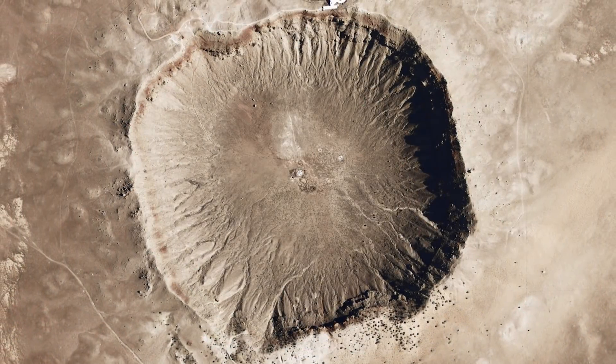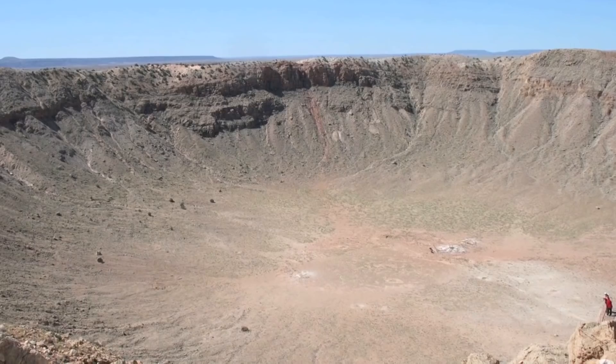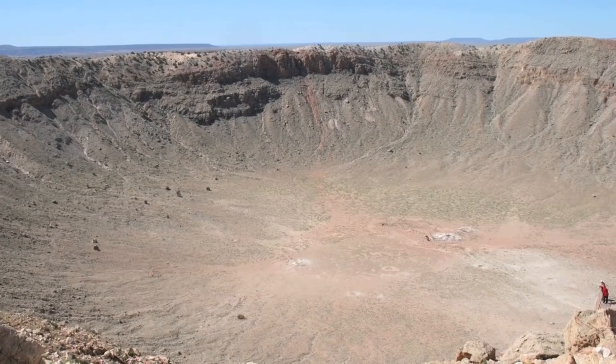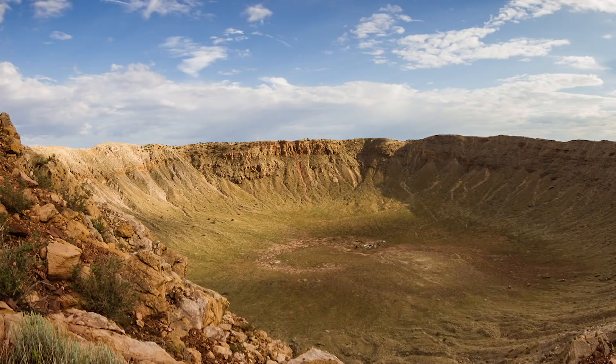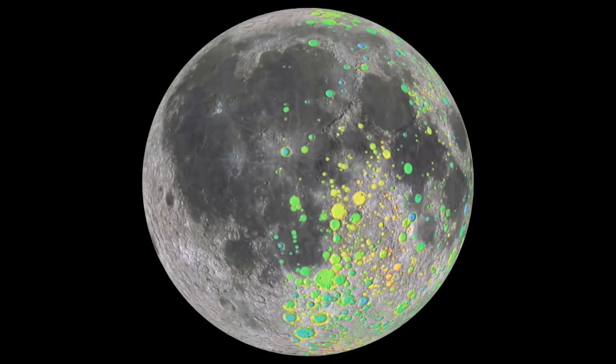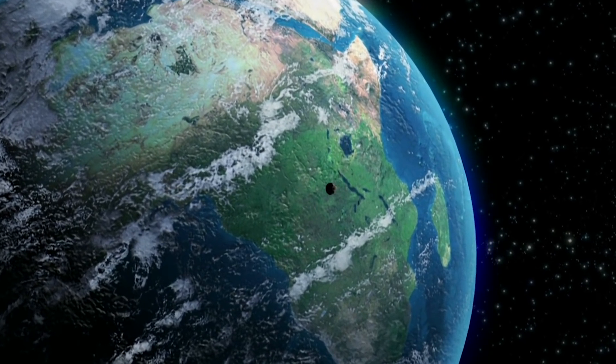We have evidence of lots of impacts on the Earth. In Arizona in the United States, we have the best preserved impact crater on the surface of the Earth — it's called Meteor Crater, though it really should be Meteorite Crater, because we have pieces of the actual iron rock that made that crater. It's about a kilometer in diameter — a tiny crater; on the Moon you wouldn't even notice it. But it happened 50,000 years ago, which gives you an idea of how often big things like that actually happen on Earth.